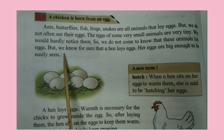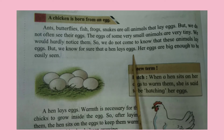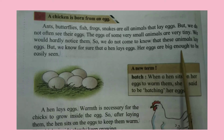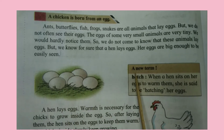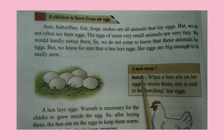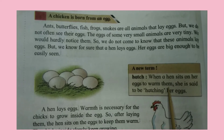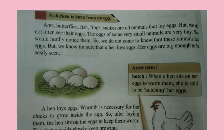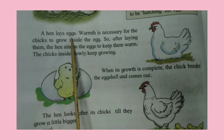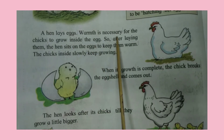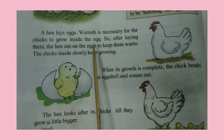But we know for sure that a hen lays eggs. Hen's eggs are big enough to be seen easily. A new term: when a hen sits on her eggs to warm them, she is said to be hatching her eggs. When a hen lays eggs, warmth is necessary for the chicks to grow inside the egg.